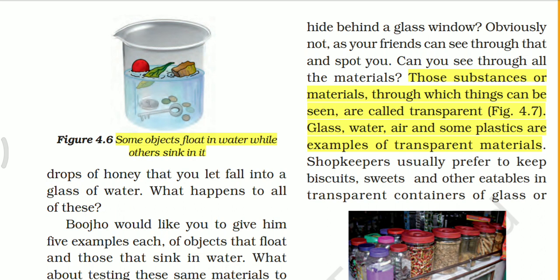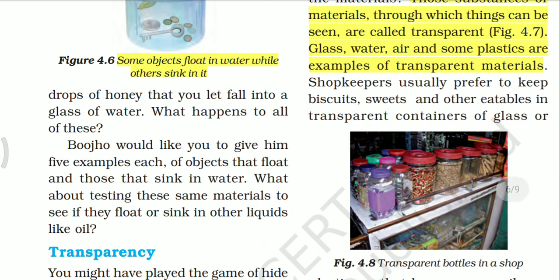Can you see through all materials? Those substances and materials through which things can be seen are called transparent materials. Glass, water, air, and some plastics are examples of transparent materials. Shopkeepers usually prefer to keep biscuits, sweets, and other eatables in transparent containers of glass or plastic.